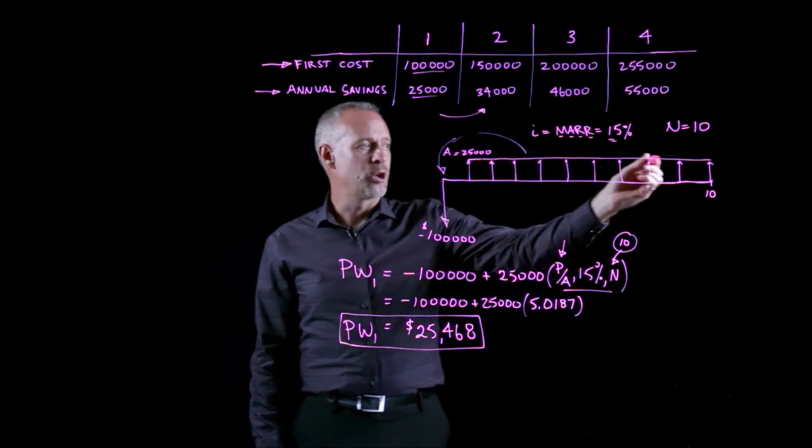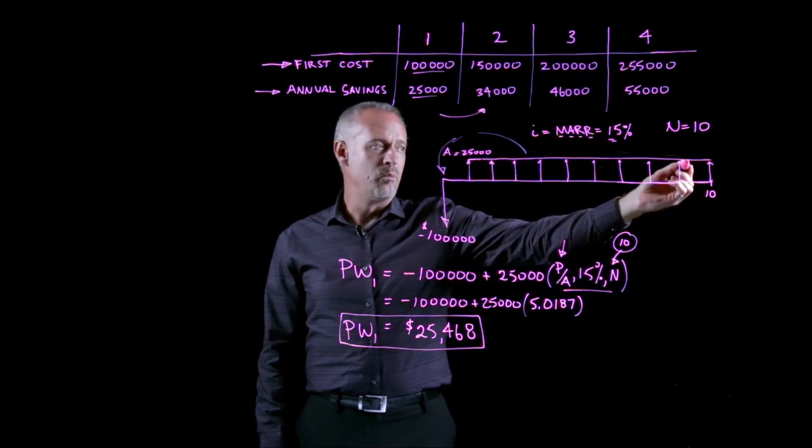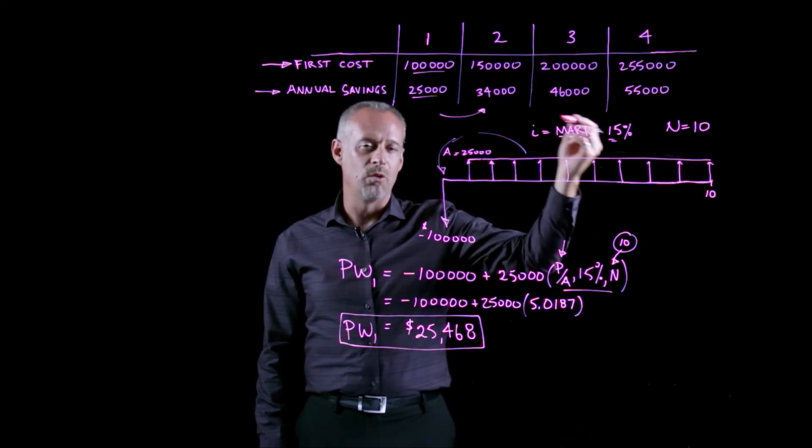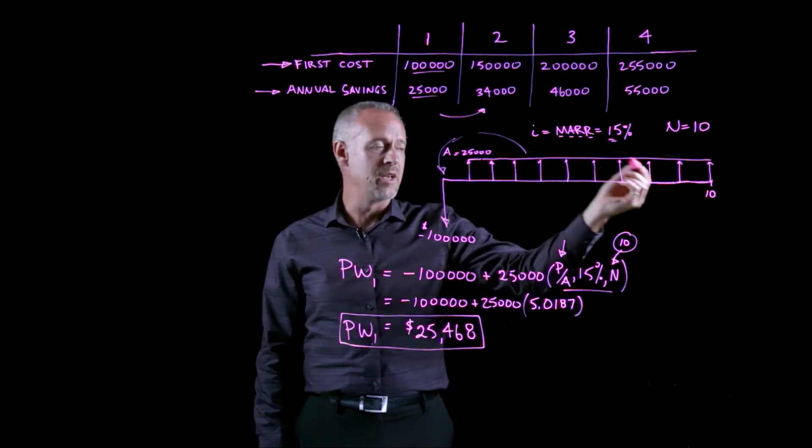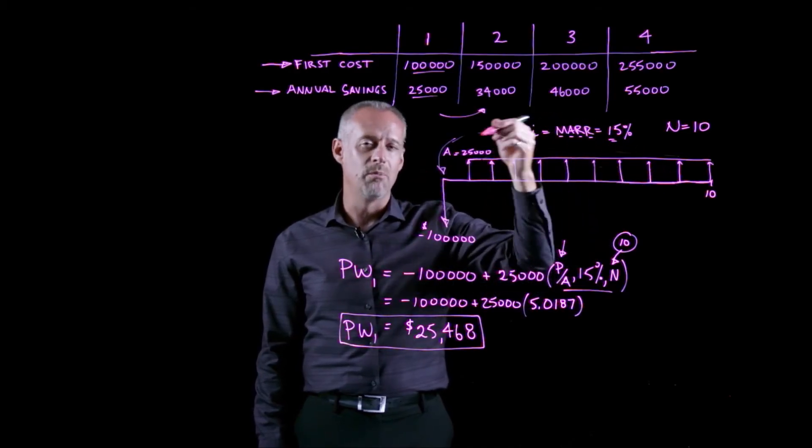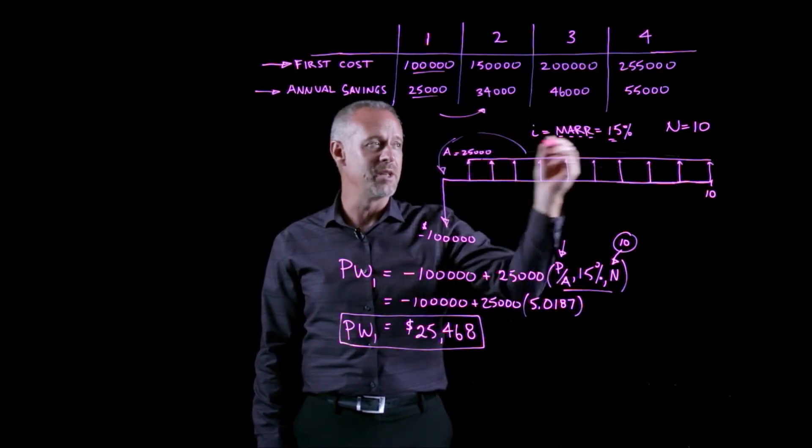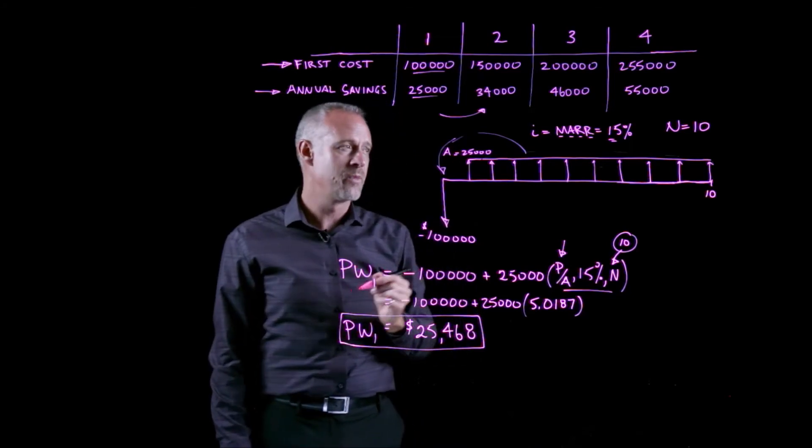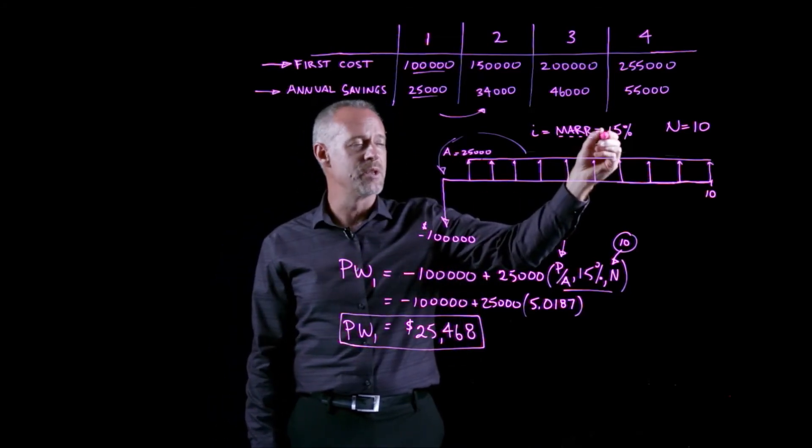Cash flows that occur in the future get smaller when we bring them back in time, and they get smaller more drastically the higher the interest rate is.